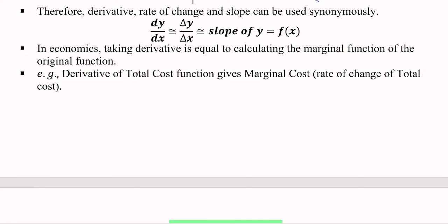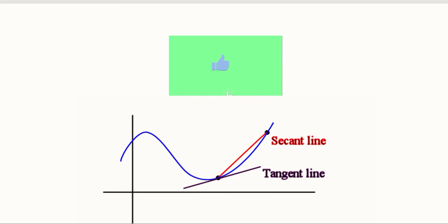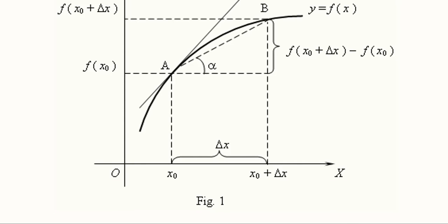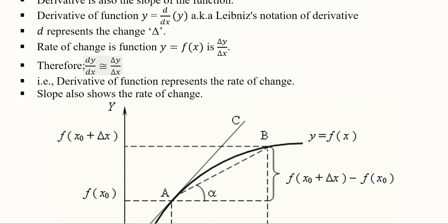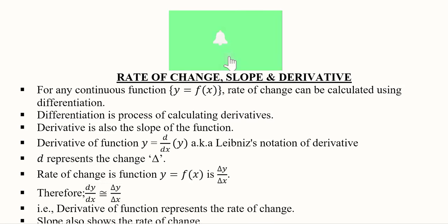Now we can talk about the economic applications. In economics, taking the derivative of a function gives us the marginal function of the original function. For example, we may want to find the marginal cost from the total cost function — in that case we find the rate of change of total cost with respect to output using the derivative. Similarly, we can find marginal revenue. This was the diagrammatical depiction of a tangent, and the key result is that rate of change, slope of a function, and derivative of a function are all equal.